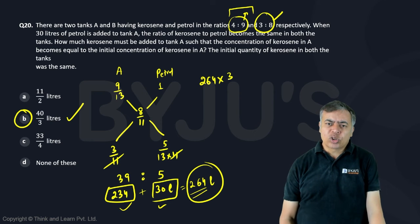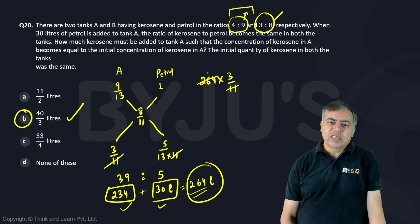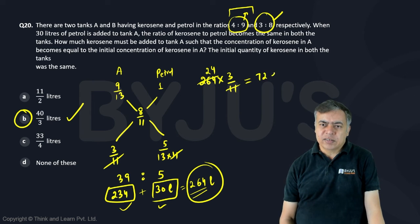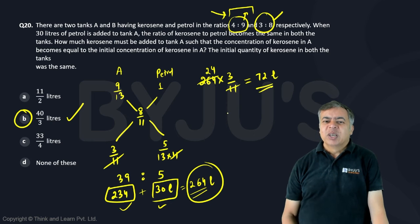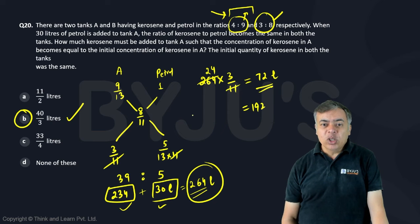Let us say kerosene. So 3 out of 11 is kerosene. So this is my kerosene which is 11 into 2, 11 into 4, so 72 litre kerosene is there in this already. So what is the petrol part? Out of 264 if you are remaining this, 192 litre is the petrol.